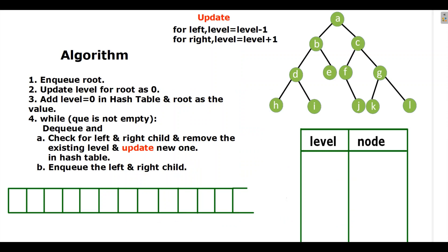Now let us see the algorithm — how we can calculate the bottom view of a binary tree. For this, we will use a queue and a hash table. First of all, enqueue the root. This is our root, so A will be pushed into the queue. Then update the level for root as zero, so for A the level will be zero.